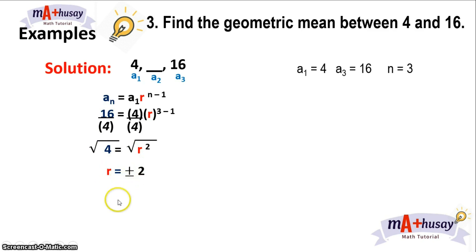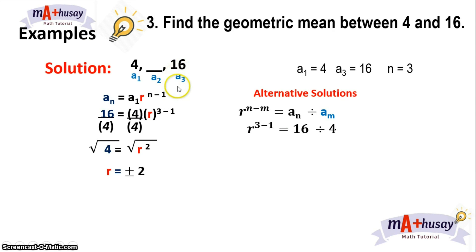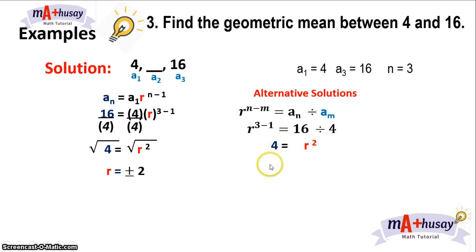For the alternative solution, take 16 and divide it by 4. Since we're talking about 3 terms only, and 16 is the third term and 4 is the first term, so 3 minus 1 is 2 — that's your exponent for the common ratio. So 16 divided by 4 is 4, and getting the square root gives r equals positive or negative 2. You can do this mentally.